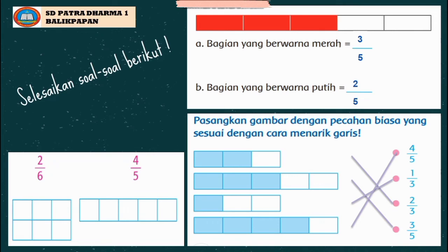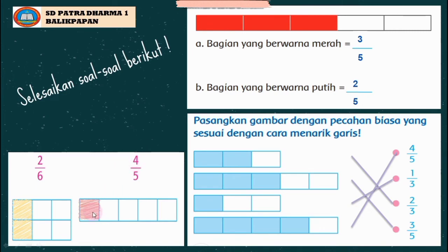Soal selanjutnya: kita akan mengarsir kotak-kotak berikut sesuai dengan pecahan yang diminta, yaitu pecahan dua per enam dan empat per lima. Yang pertama, dua per enam: sudah ada enam kotak, maka kita arsir dua bagian saja dari enam kotak yang sama besar, seperti ini. Selanjutnya, empat per lima: sudah ada lima kotak yang sama besar, kita arsir hanya empat bagian saja. Begini caranya anak-anak.